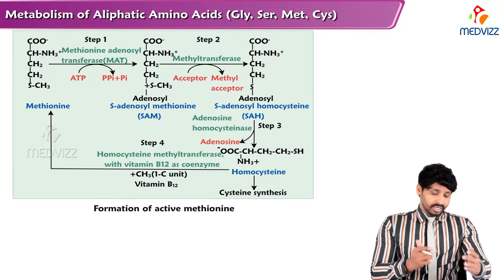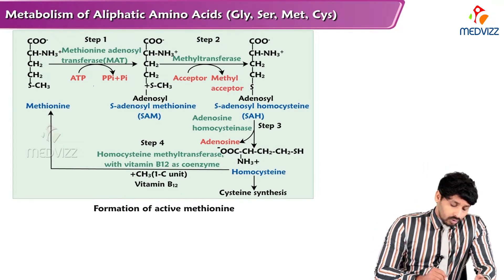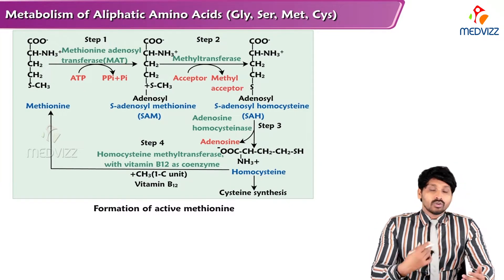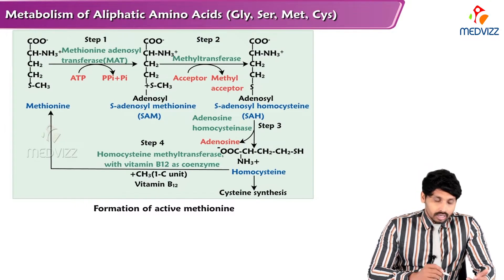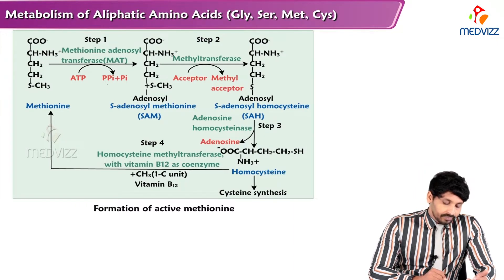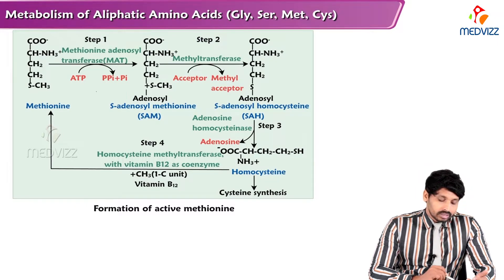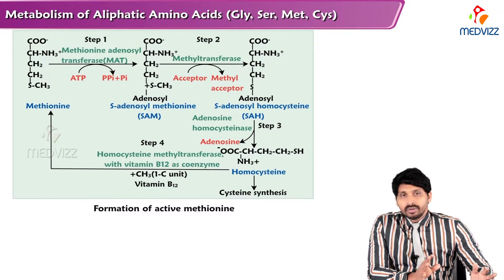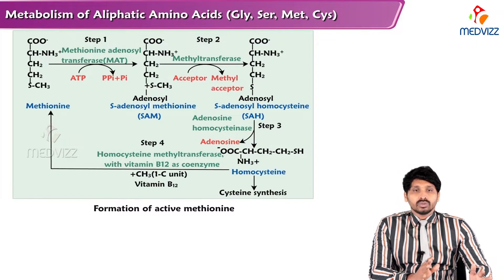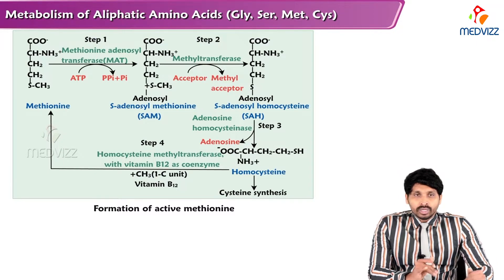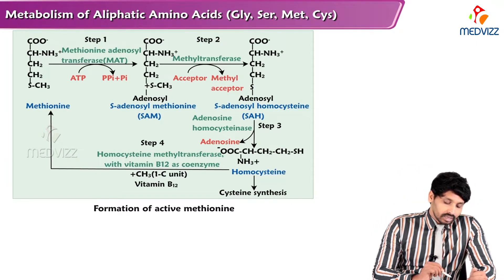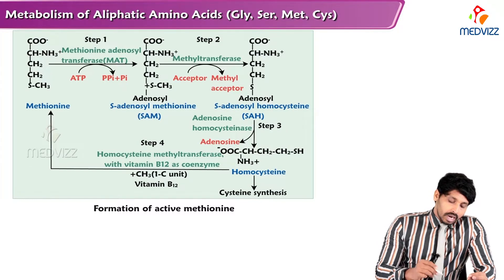How is SAM formed? An adenosyl group is added to Methionine to form S-Adenosyl Methionine. ATP loses all three of its phosphates and one adenosine group is added — that is why it is called adenosyl Methionine. This reaction is catalyzed by the enzyme Methionine-Adenosyl Transferase.